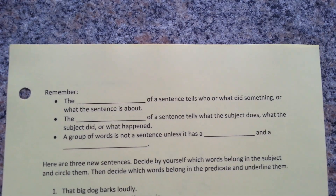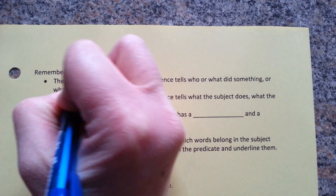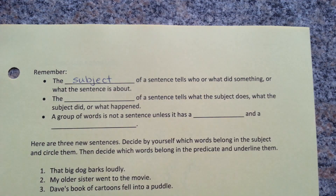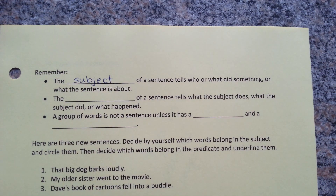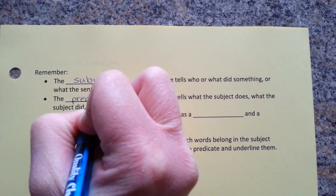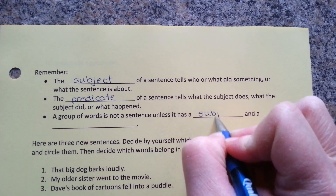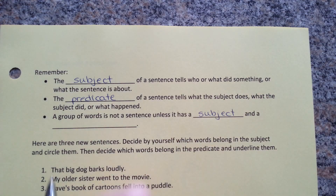A couple of things to remember when talking about subjects or predicates. The subject of a sentence tells who or what did something, or what the sentence is about. The predicate tells what the subject does, what the subject did, or what happened. A group of words is not a sentence unless it has a subject and a predicate.